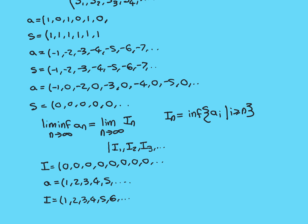For the two unbounded-below examples we discussed, they do not have limit inferiors. The sequence -1, -2, -3, ... doesn't have a limit inferior or a limit superior. And the alternating sequence -1, 0, -2, 0, ... has a limit superior but doesn't have a limit inferior.